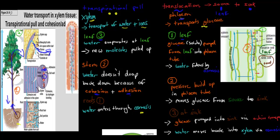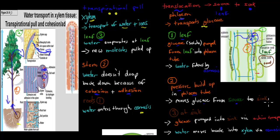The pumping happens through active transport. But then because there's now more solute — because glucose is a solute — in the actual phloem, we will have water moving from the nearby xylem tube into the actual phloem tube by osmosis. So now we've got lots of glucose and lots of water all in one space, which means there's a pressure buildup in the phloem tube — much pressure at the location of the source. Which means that glucose will move from the source, the high pressure area, to a low pressure area — basically the sink, which would be the roots or the stem — because things always move from high pressure to low pressure.